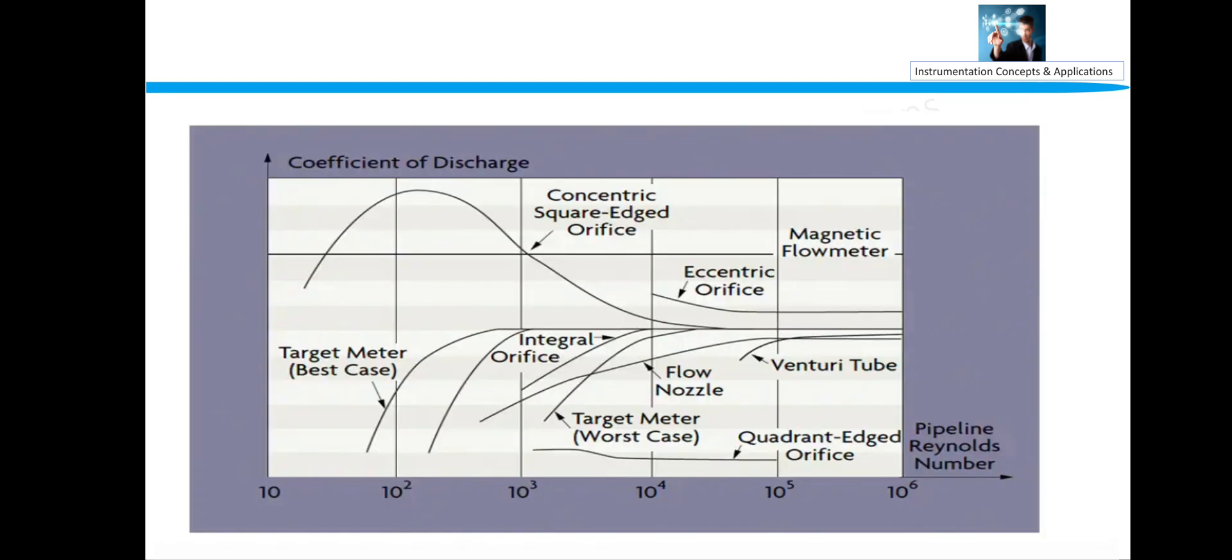Coming to one picture which depicts the coefficient of discharge versus Reynolds number. We have already discussed that if Reynolds number are quite less, then concentric square is used. After that, if we move towards right hand side, then eccentric.